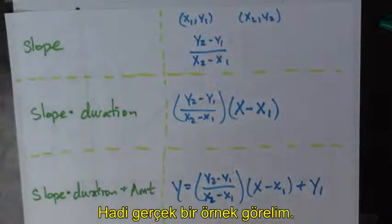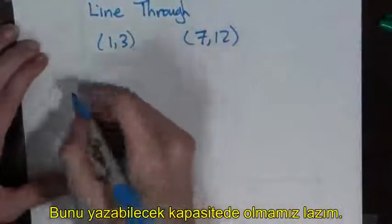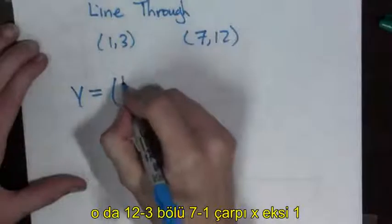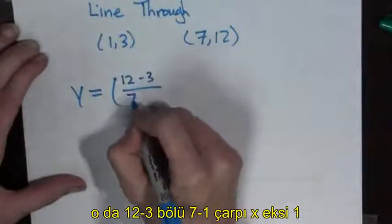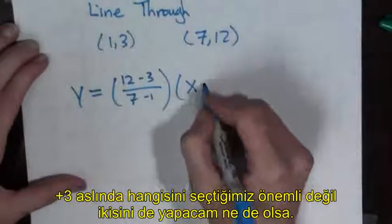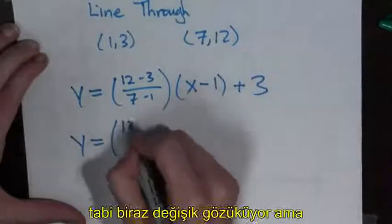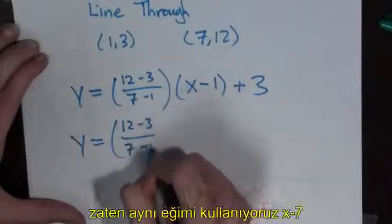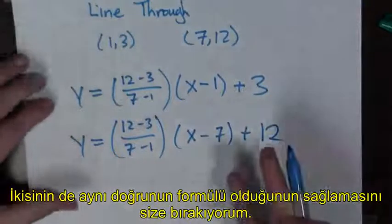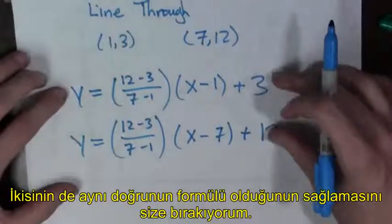Let's see a real example of this. Now suppose you want the line that goes through the points 1, 3, and 7, 12. We are going to have 12 minus 3 all over 7 minus 1 times x minus - it doesn't matter if I choose 1 or 7, I'll actually do both - x minus 1 plus 3. But another perfectly good answer, the same answer in fact, just looks a little different, is when you have the same slope and you do x minus 7 plus 12. I leave it to you to verify that these two equations both plot the same line.